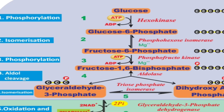In the first step, glucose is converted to glucose 6-phosphate through phosphorylation. During phosphorylation, one phosphorus from ATP is added to glucose to form glucose 6-phosphate. The enzyme involved in this process is hexokinase.